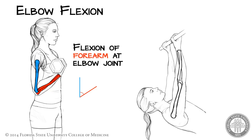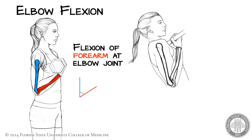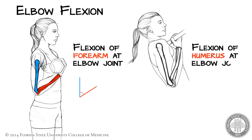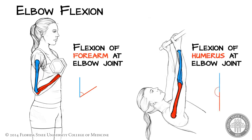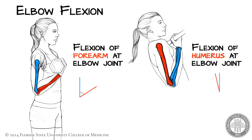Likewise, performing a chin-up is also an example of elbow flexion. However, we can describe the movement as flexion of the humerus at the elbow joint. The humerus is in motion, while the bones of the forearm are immobilized by the fixation of the hands to the bar.